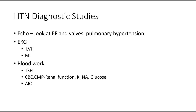For monitoring patients with hypertension, you may order an echocardiogram to look at ejection fraction, valves, and signs of pulmonary hypertension. An EKG can show signs of pulmonary hypertension, LVH, or a previous MI. For blood work, consider a TSH to rule out secondary hypertension, a CBC to check for anemia, and a CMP to look at renal function — BUN, creatinine, GFR, potassium, sodium, and glucose. If the patient is diabetic or prediabetic, monitor their A1c.